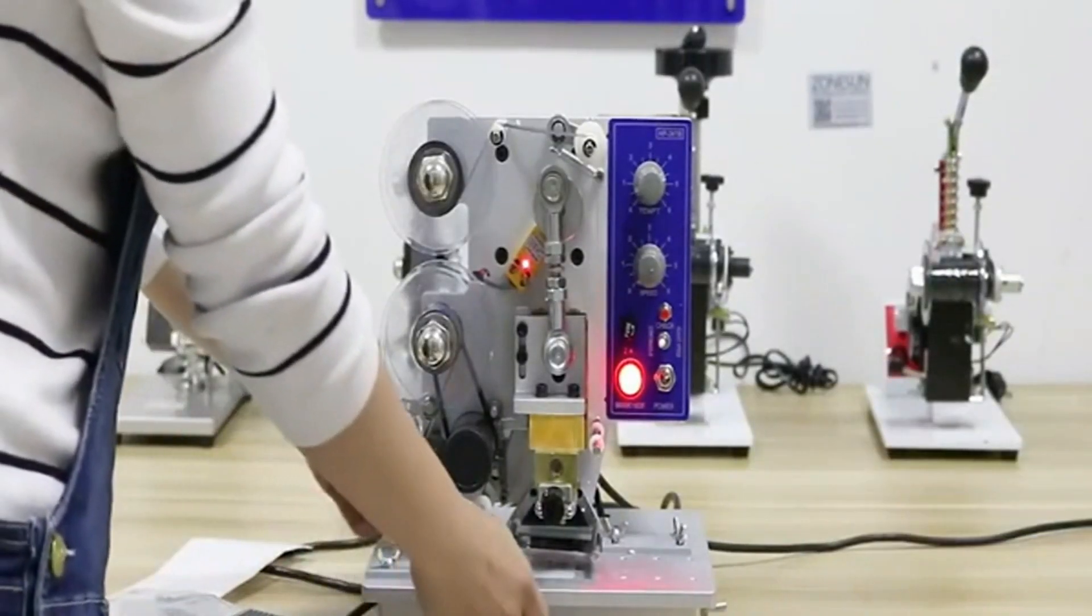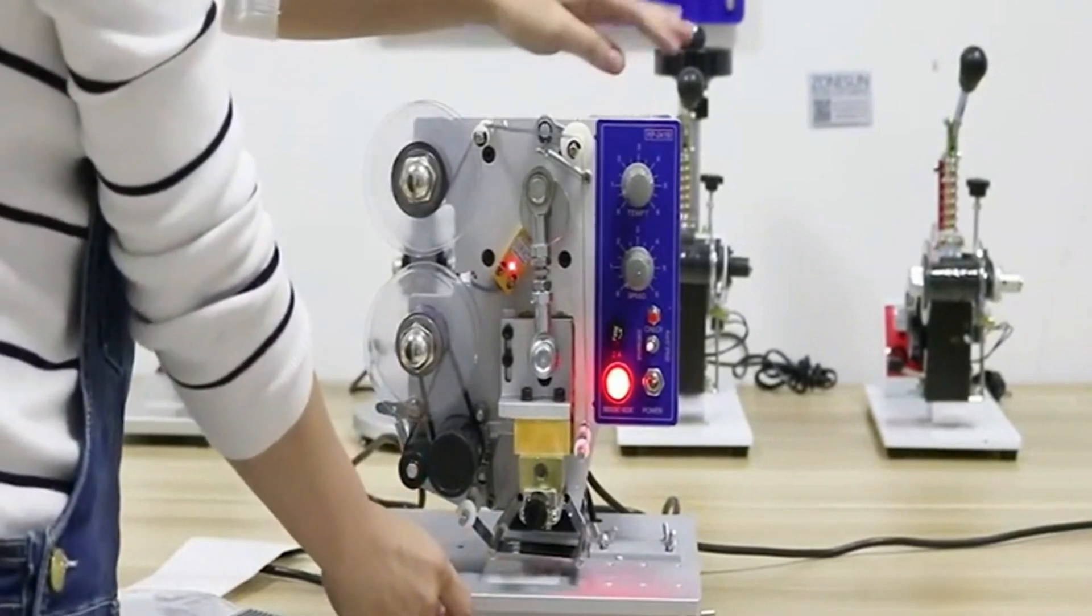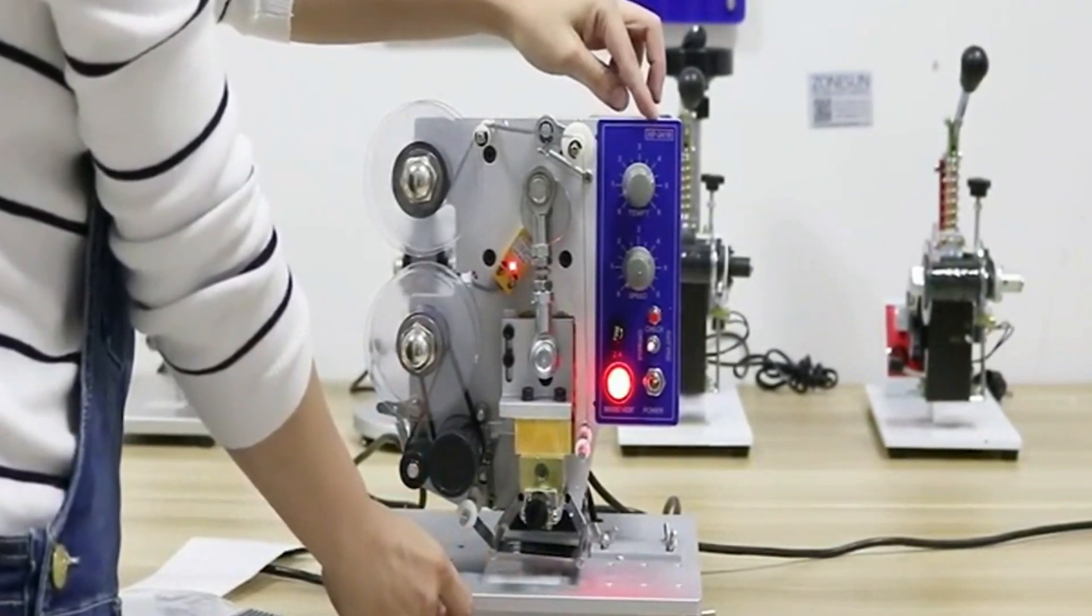Hello everyone. Greetings from Johnson. Today we would like to introduce this heat stamper to you. Item number is HP.241B.